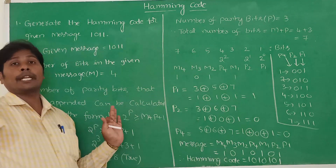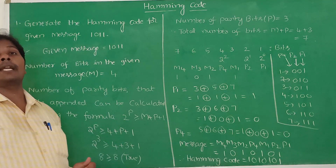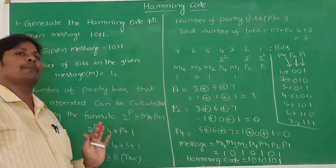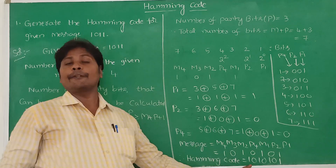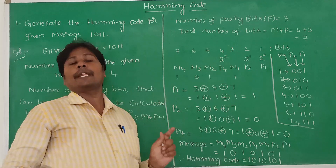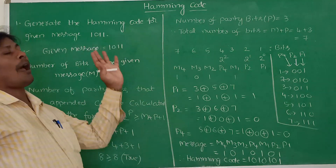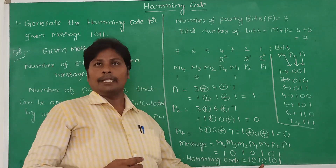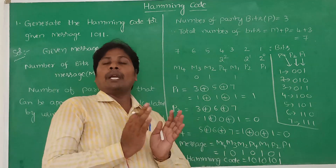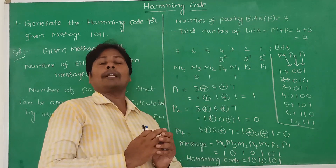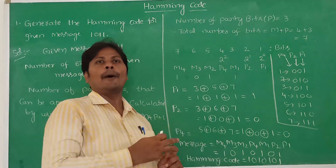Sometimes in a given problem the received message at the receiver is also given. At that time, to identify the error, this generated Hamming code is compared with the received message bit by bit. At whichever position they are different, at that position the error has occurred. The comparison is made from LSB to MSB. Those problems are already discussed in the previous videos.